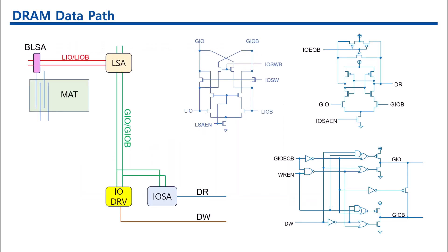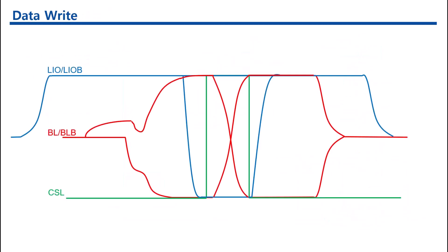During a data write operation, the strong IO driver drives the GIO and GIOB lines to the LSA, line sense amplifier, NMOS transistors. These in turn drive the LIO and LIOB lines, and through the CSL, column select line, drive the bitlines BL and BLB. The strong IO driver needs to overcome the BLSA; since BLSA is not very strong, it is easier to flip the BLSA and write the data into the memory cells.